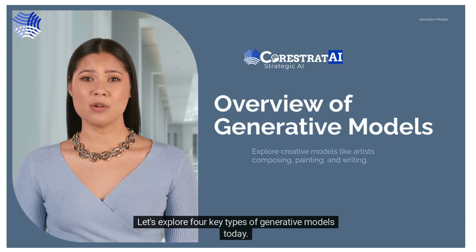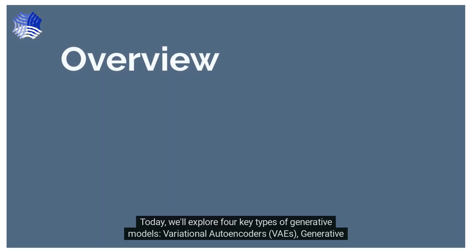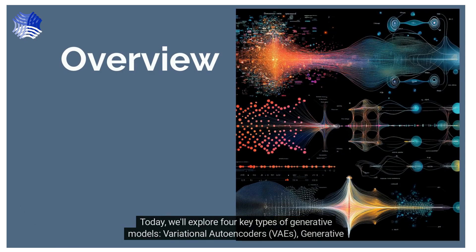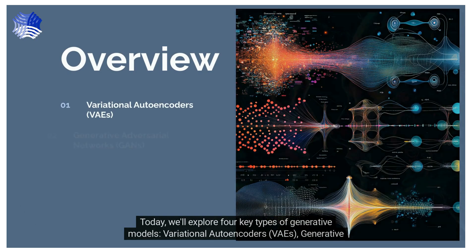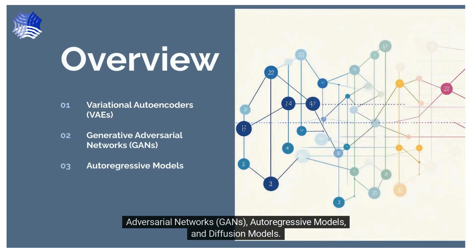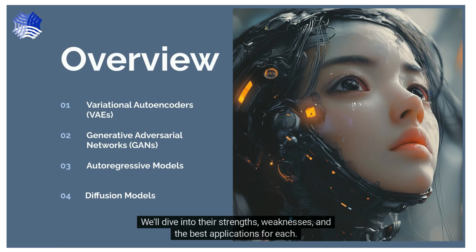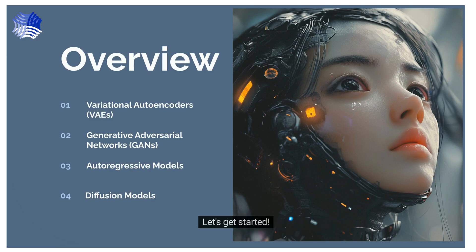Today we'll explore four key types of generative models: Variational Autoencoders (VAEs), Generative Adversarial Networks (GANs), Auto-Regressive Models, and Diffusion Models. We'll dive into their strengths, weaknesses, and the best applications for each. Let's get started.